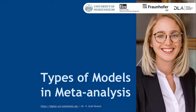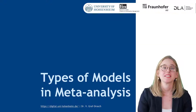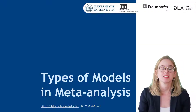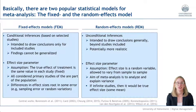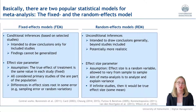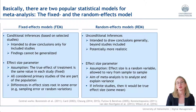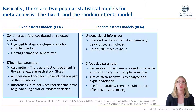Basically, there are two popular statistical models for a meta-analysis: the fixed and the random effects model. Before I explain both models in detail, I want to note that we have already talked about univariate and multivariate approaches.